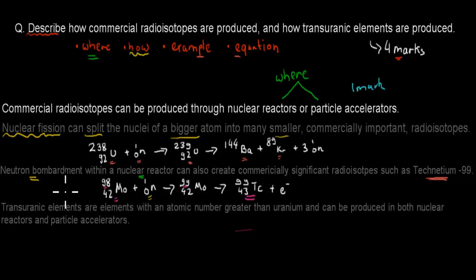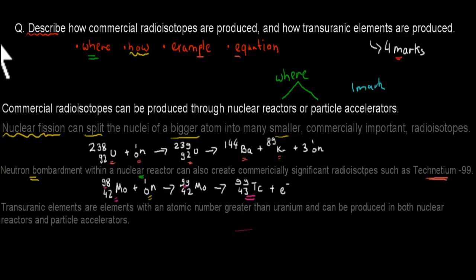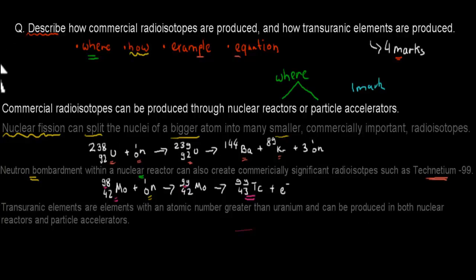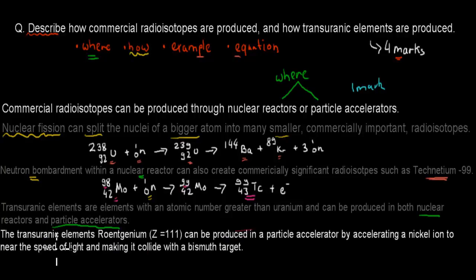Now for how transuranic elements are produced: transuranic elements are elements with an atomic number greater than uranium. They can be produced in both nuclear reactors and particle accelerators — again, that covers the 'where.' Now I'll go into how they are produced as well.